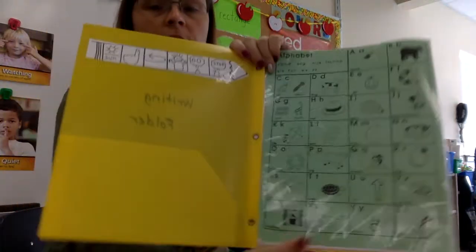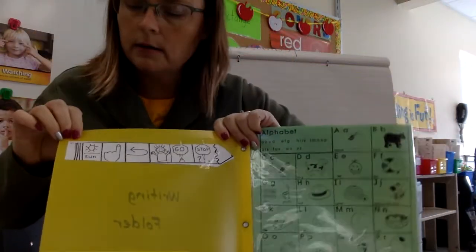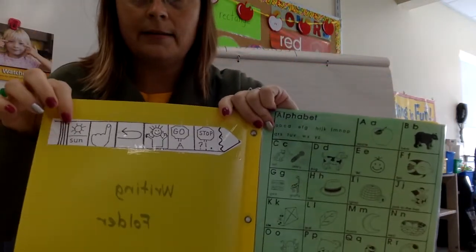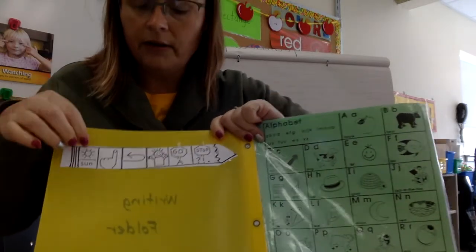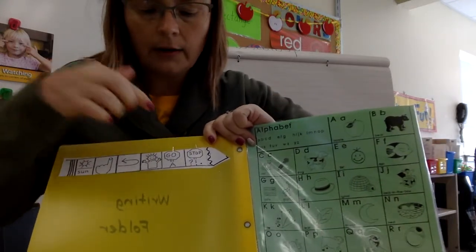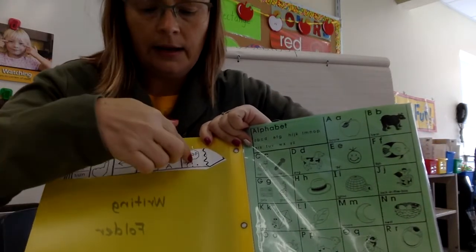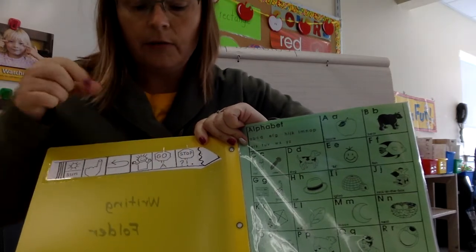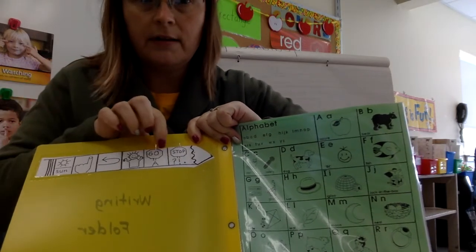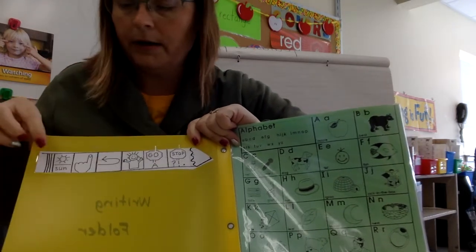I also have a little rubric here on a pencil. This talks about what makes a sentence. A sentence has to start with a capital and end with a period. So we want to make sure a sentence is starting with a capital and ending with a period.